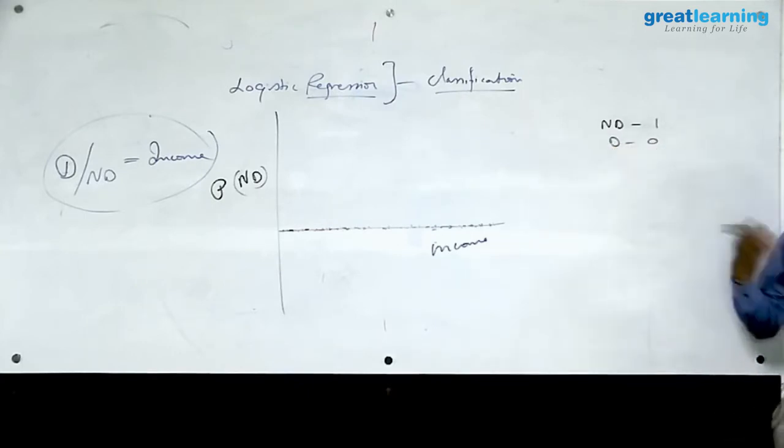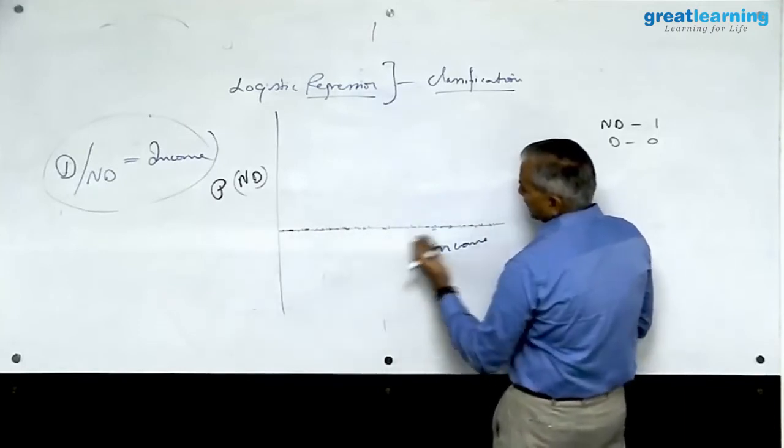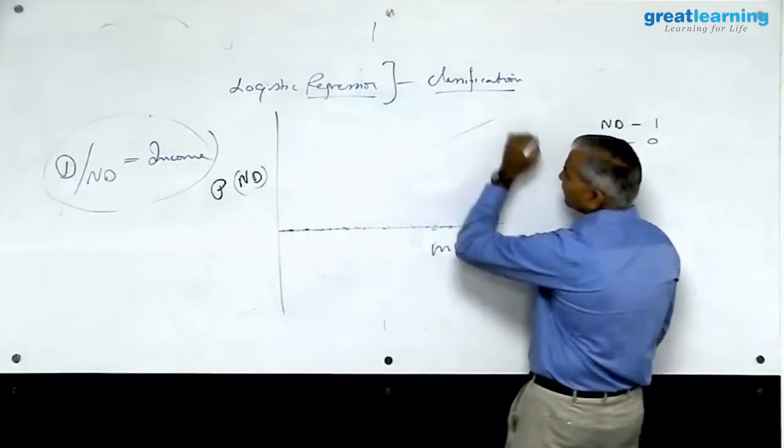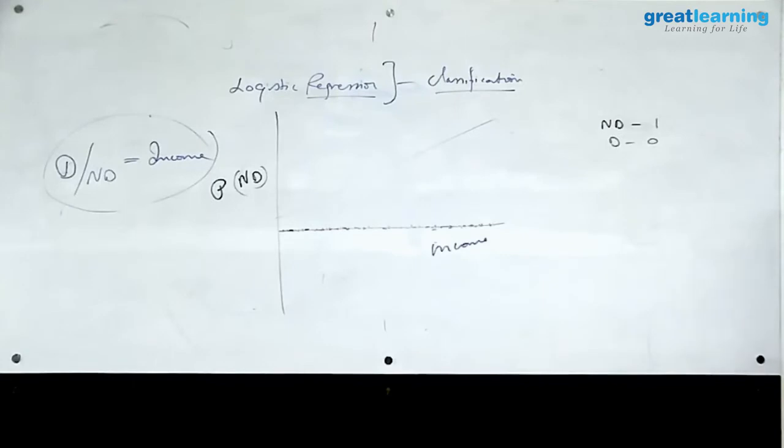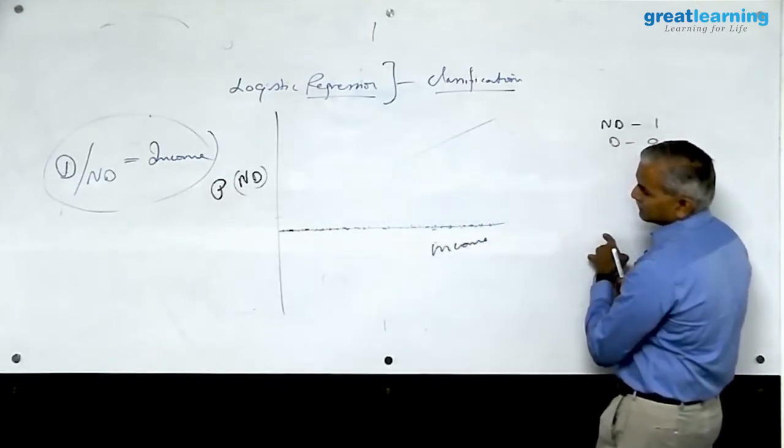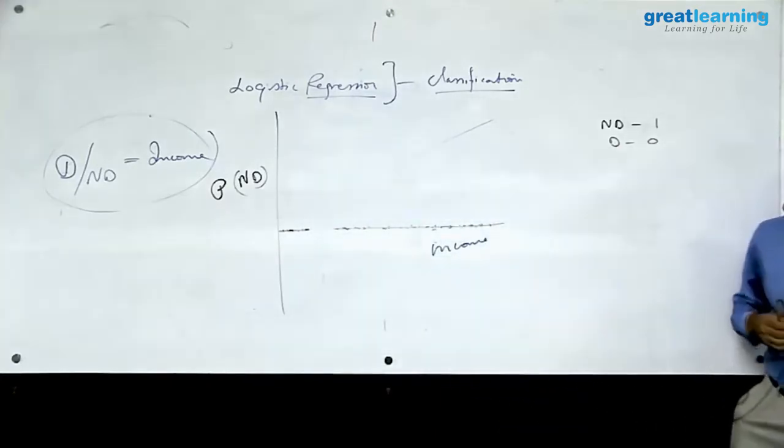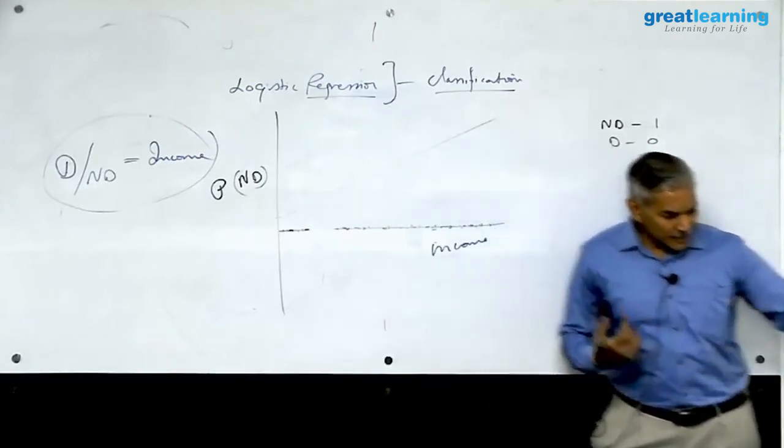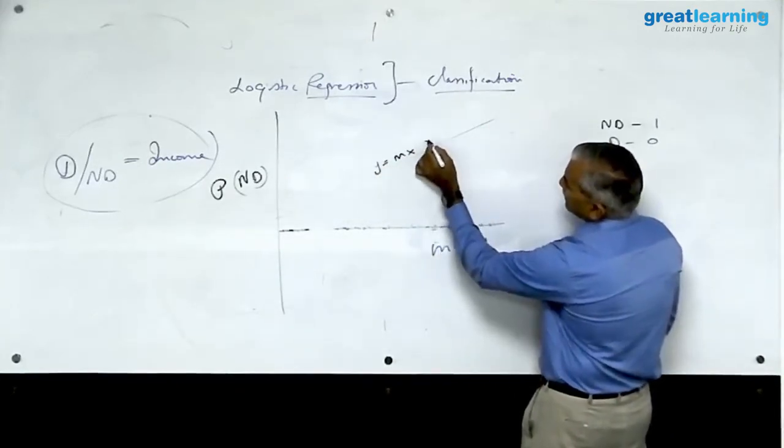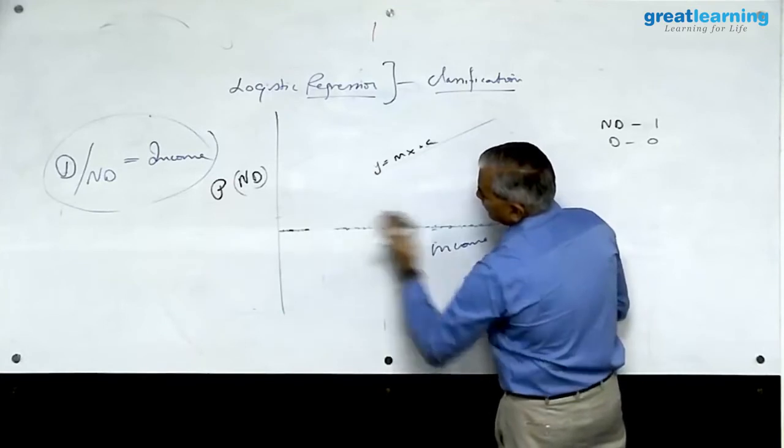Now, when I do this, what this model, linear model tells me is, what the linear model which I built on this, it tells me is, as the income increases, probability of that person being non-default increases. That is what we are observing in this cluster. As the income increases, probability of any person being non-default increases. As the income decreases, probability of person being non-default decreases. That is what we are seeing here. So this, I want to convert into linear model. So when I do that, I get this line. And this line is of the form y equal to mx plus c, where x is your income and m is the slope of this line with the horizontal axis.